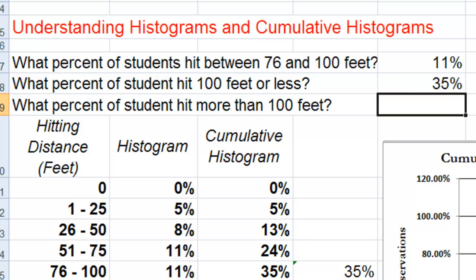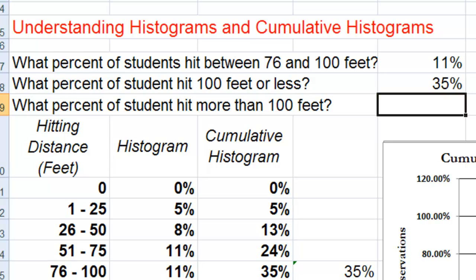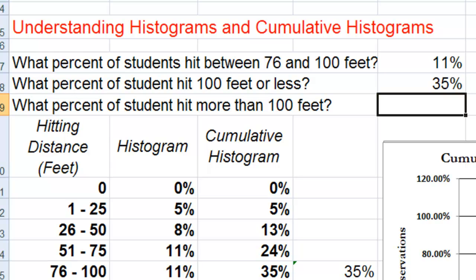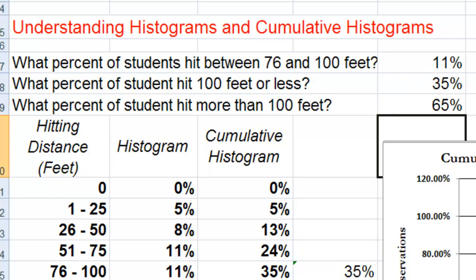So now we know that 35% of students hit 100 feet or less. Now suppose we want to know what percent of students hit more than 100 feet. This is also easy. If 35% of students hit 100 feet or less, then it must be that 65% of students hit more than 100 feet, because the two values must sum to 100%. So 1 minus 0.35 gives us 0.65, or 65%, and these two values sum to 100%.